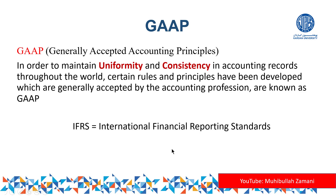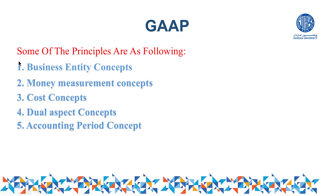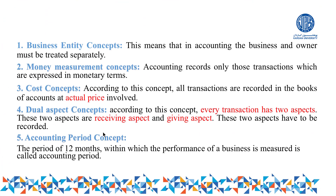The first principle is the Business Entity Concept. According to this concept, in accounting the business and owner must be treated separately. The business entity concept says that the owner should be considered as a separate person and the business should be considered as a separate person. According to the law, a business is an individual legal person and the owner is also an individual person.